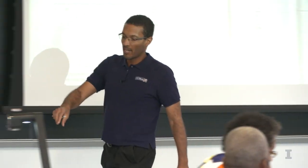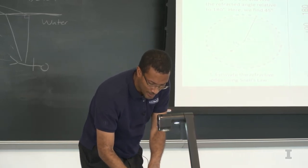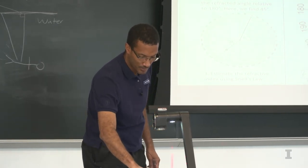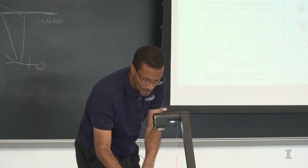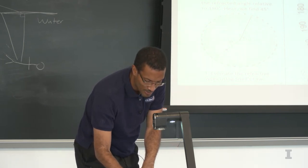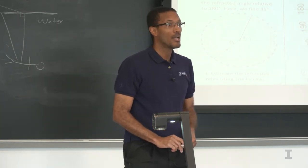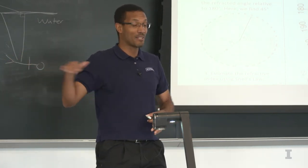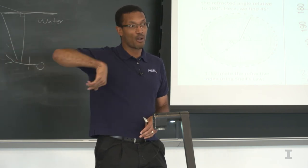Think about what angles give the most accuracy. Will you get better accuracy shining at a very small angle or a very large angle? Theta one is the angle from 0 degrees to where the laser comes in — so at 70 degrees, it goes up to 70. In science and math, the horizontal axis is zero degrees and counterclockwise is a positive angle.